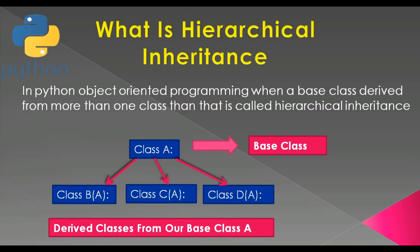In this video we are going to talk about hierarchical inheritance. In the previous videos we have learned about inheritance, multiple inheritance, and multi-level inheritance. In this video we are going to talk about and create an example of hierarchical inheritance. In Python OOP, when a base class is derived from more than one class, that is called hierarchical inheritance.